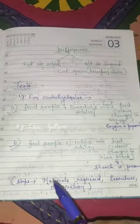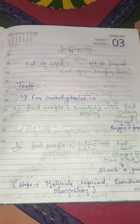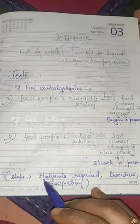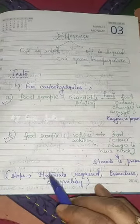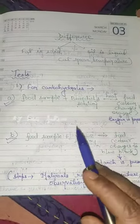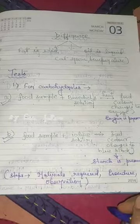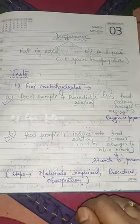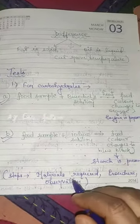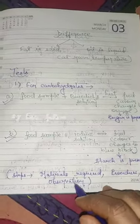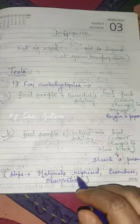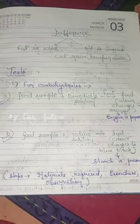Keep in mind that while writing the test, we will write in proper steps: first we mention the materials required, then the procedure — the method of testing — and third the observation, what happens, and the result.